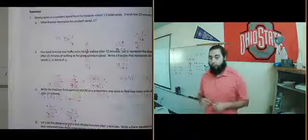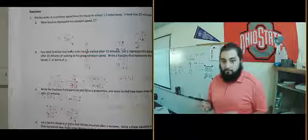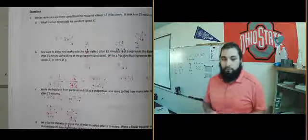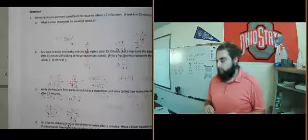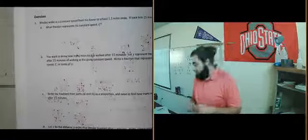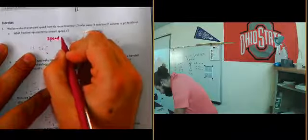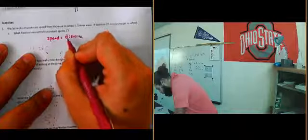So we're going to take a look at question number 1 in the exercises. It says Wesley walks at a constant speed from his house to school 1.5 miles away. It took him 25 minutes to get to school. So as a fraction they essentially just want to figure out what is the constant speed.